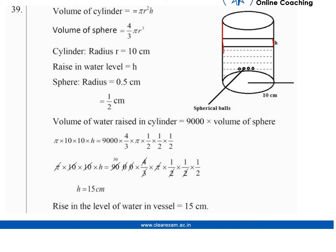Volume of the cylinder is πr²h. Volume of the sphere is (4/3)πr³. The cylindrical vessel has radius r = 10 cm, rise in water level is h, and the sphere radius is 0.5 cm which equals 1/2 cm.